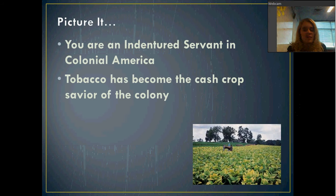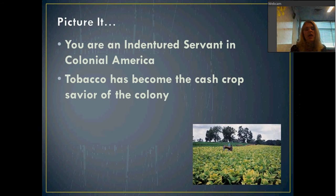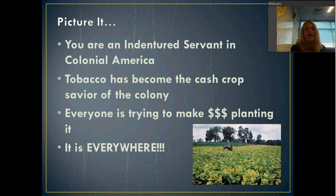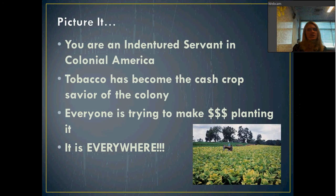If you think about it, tobacco is a drug, and drugs sell. Tobacco started to sell very well in England when people realized its qualities. The tobacco farm becomes the main farm in the American colonies — everyone is trying to plant it because that's what's going to make you money. So everybody in Virginia has a tobacco farm, and it is everywhere. This is the situation you are coming into as an indentured servant working on somebody's tobacco plantation.